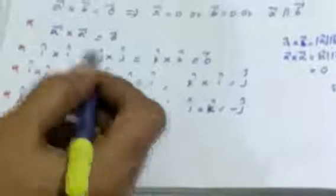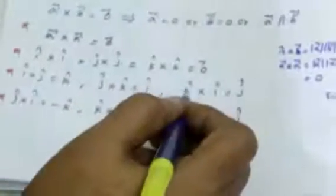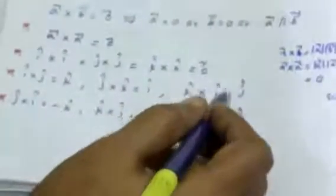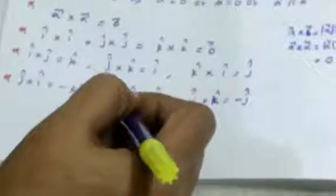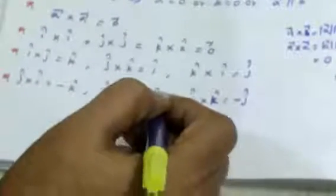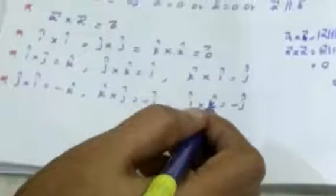For the unit vectors: i cap cross j cap equals k cap. This follows the clockwise rotational pattern: i cross j equals k, j cross k equals i cap, k cap cross i cap equals j cap. And i cap cross k cap equals minus j cap.